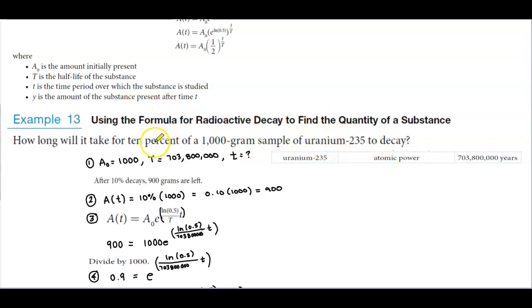Well, we can see here that the sample is 1000 grams. And so we want to know how much is it going to be decaying. So that's going to be the initial amount. That's how much it starts with.